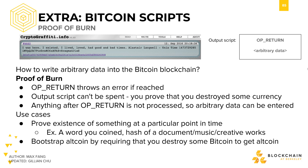Something cool you can do with Bitcoin script is to write arbitrary data into the Bitcoin blockchain. This is the idea behind proof of burn. There's an opcode in script called OP_RETURN that throws an error if it is reached. If you specify a script that has OP_RETURN before the output script,